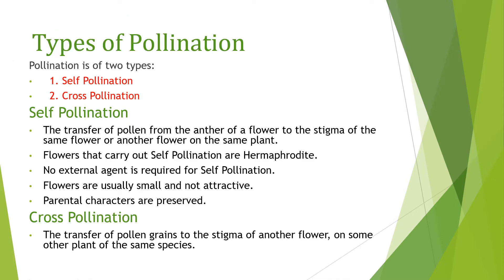Basically, there are two types of pollination: self-pollination and cross-pollination. In self-pollination, there is a transfer of pollen grains from the anther of a plant to the stigma of the same flower, or another flower but on the same plant.